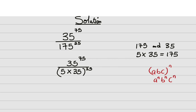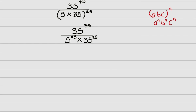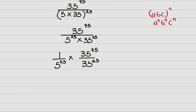Since we know this law, the expression becomes 35 raised to power 75, all over 5 raised to power 25 times 35 raised to power 25. I will now rearrange this to have one over 5 raised to power 25, times 35 raised to power 75 over 35 raised to power 25.